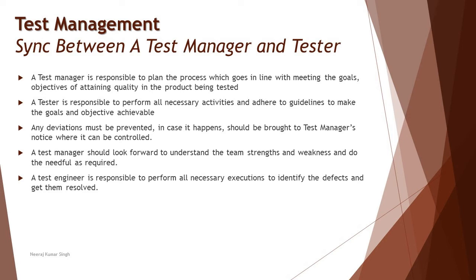When the performance of the process is ongoing — the schedule, timelines, availability of certain items as per the entry criteria — you bring it to the knowledge of the manager. For example, you inform them that something was scheduled for a certain date but there is currently no clarity on a particular requirement, and it may get delayed further.